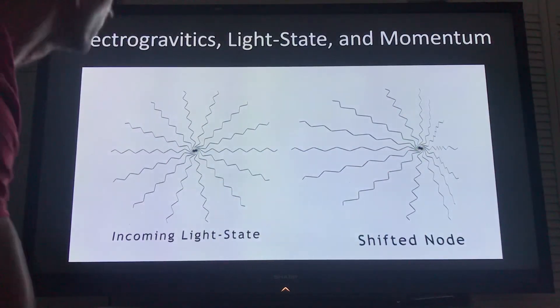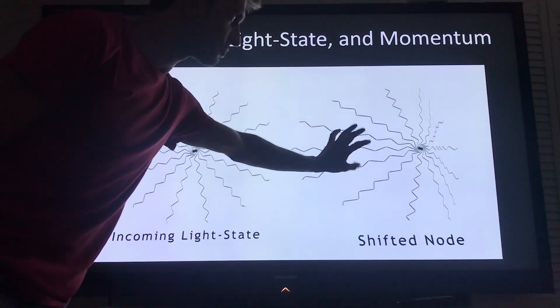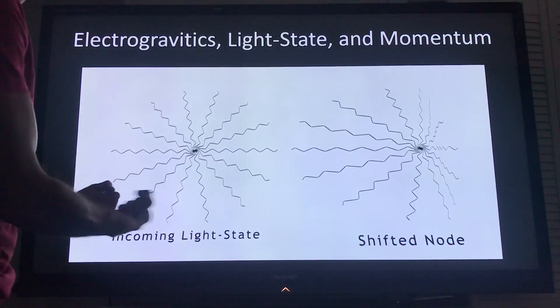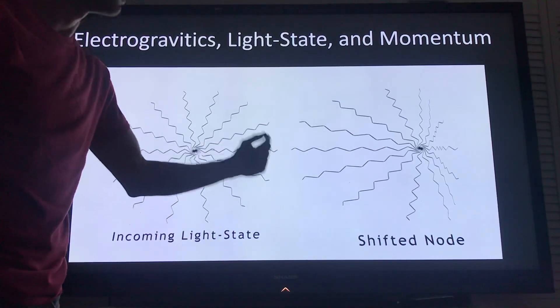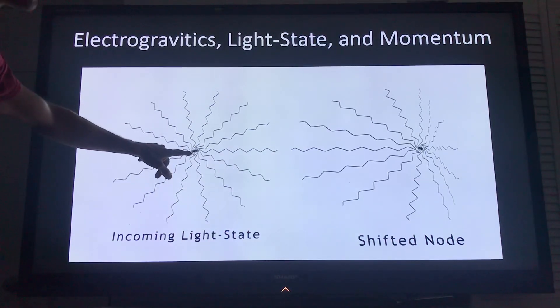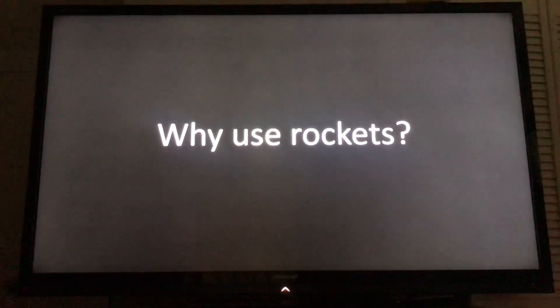Okay so what electrogravitics does is it works with the past state of the object as well as the future state of the object. So here you can see the incoming light state of a node and electrogravitics what it does is it shifts the nodes, it creates a stretching and crunching force. And so you're not actually moving the object with collisions in the now, you're moving the past, the now and the future of the object. No momentum, you have moved the manifestation potential with the object at the same time.